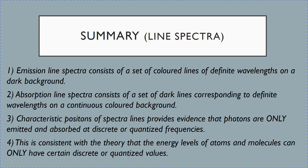So to summarize, there are two types of line spectra and you need to distinguish between them. For the emission line spectra, it consists of a set of colored lines of definite wavelength on a dark background. The absorption line spectra, in contrast, consists of a set of dark lines corresponding to definite wavelengths on a continuous colored background.